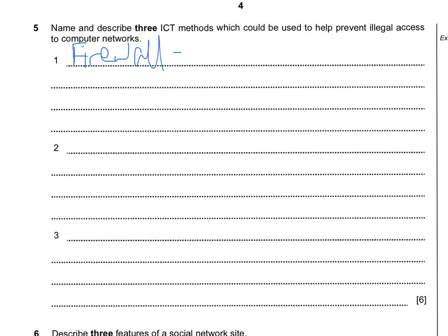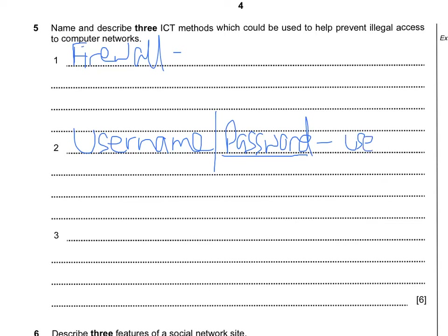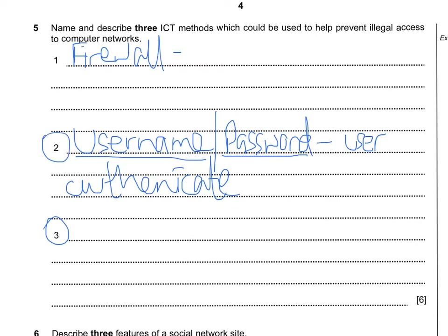The next main aspect would be a username and password. In order to access a LAN or a network, you need a username — a unique name to identify a person, and that's how you explain it in the exam. The password is also required because it will allow the user to authenticate themselves to the network. Username and password will be classed as one form of method.